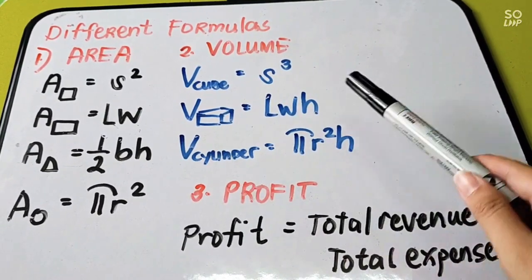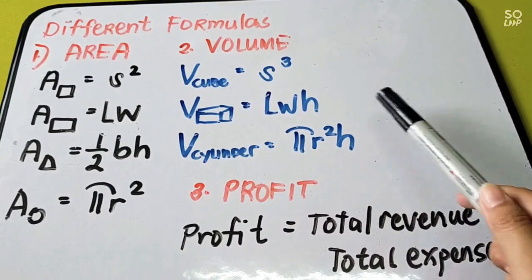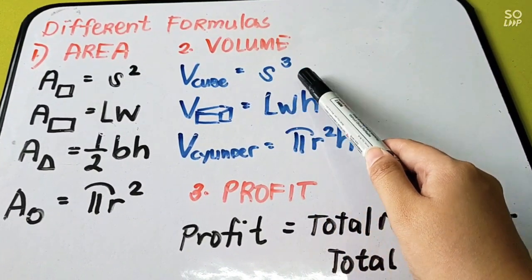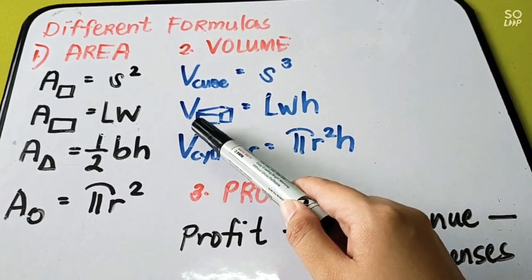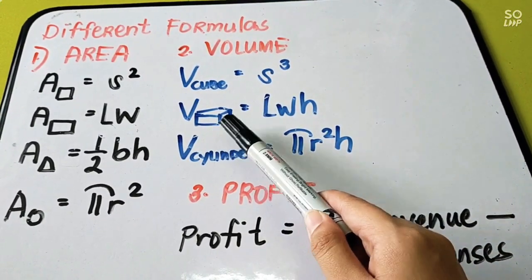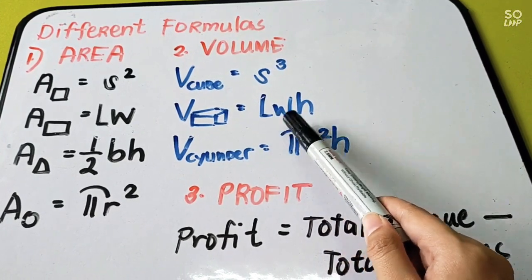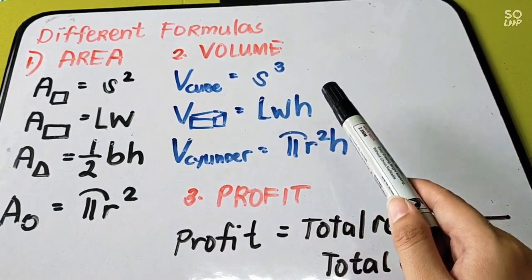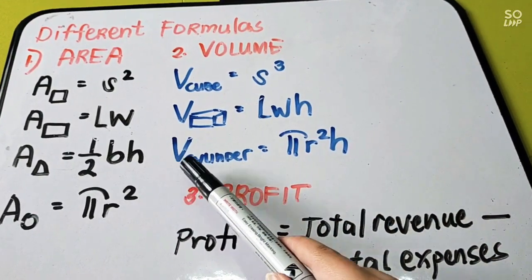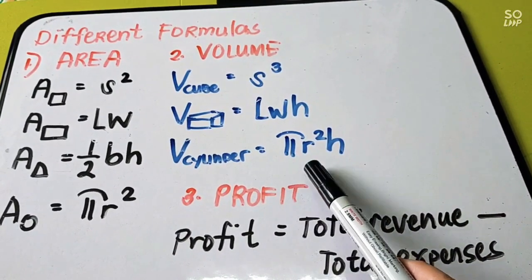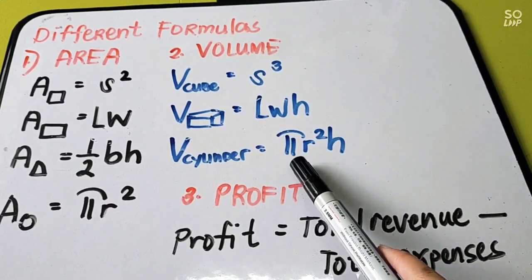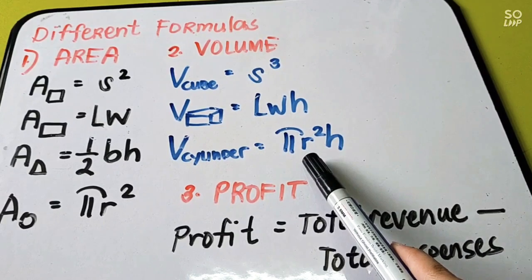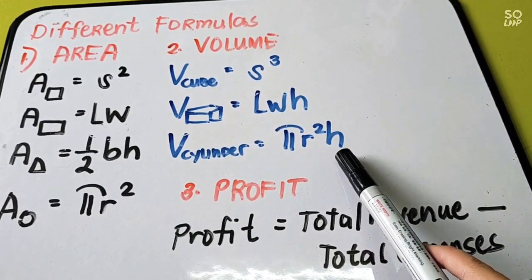Next, let us have some volume formulas. We have the volume of a cube, which is equal to S³, where S means the side. The volume of a rectangular prism is equal to LWH — length multiplied by width times height. The volume of a cylinder is equal to πR²H, where π is equal to 3.1416, R is the radius, and H is the height of the cylinder.